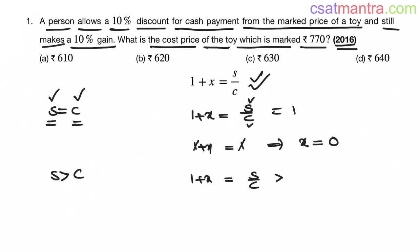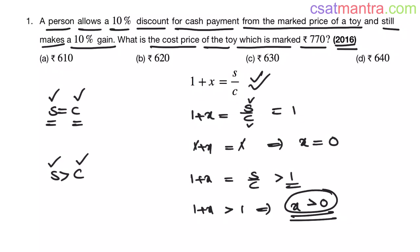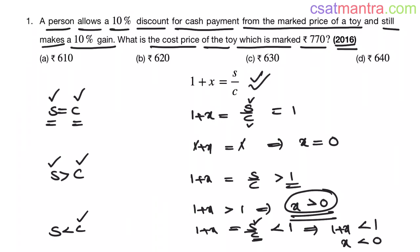When selling price is greater than cost price, S by C will be greater than 1, so 1 plus x is greater than 1, meaning x is greater than 0 — x is positive, so we have a profit. That's why when it comes to profit we take x as positive. When S is less than C, you are selling at a price lower than cost price, meaning you have a loss. S by C is less than 1, so 1 plus x is less than 1, x is less than 0 — x is negative. That's why for loss we take x as negative. This is the formula: 1 plus x equals S by C.